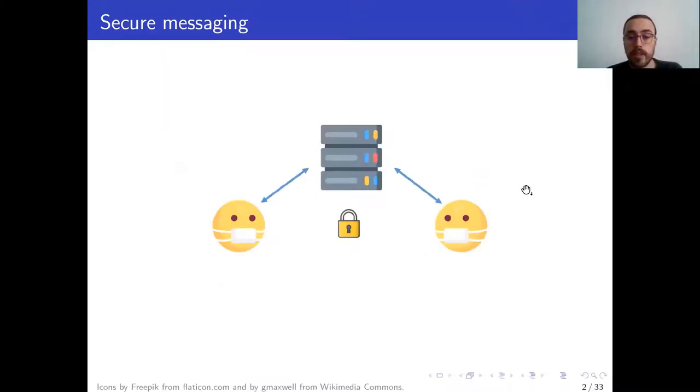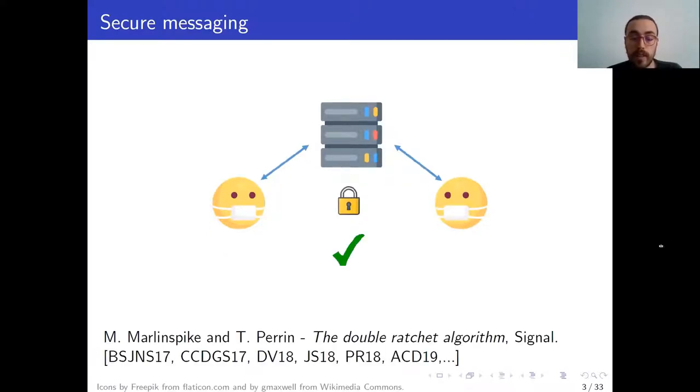I will start with our motivation, which is secure messaging, where parties that need not be online at the same time exchange messages by means of a server that buffers them and relays them to users as they come online. The two-party case has seen quite a lot of attention from the academic community, particularly since the inception of the double-ratchet algorithm. So we can consider this setting as well understood.